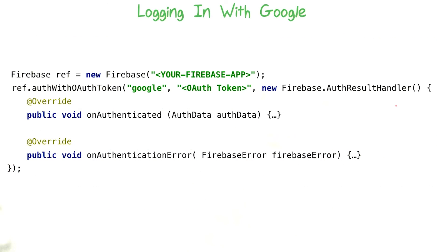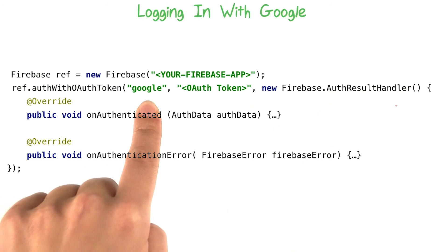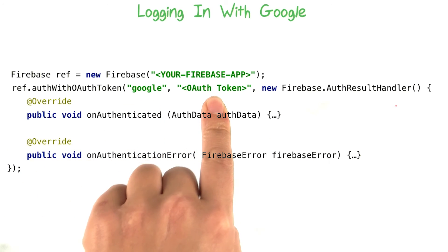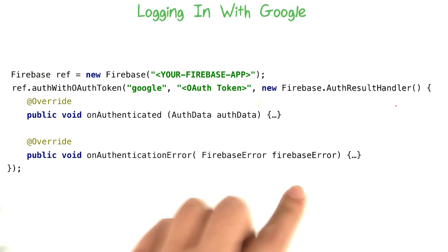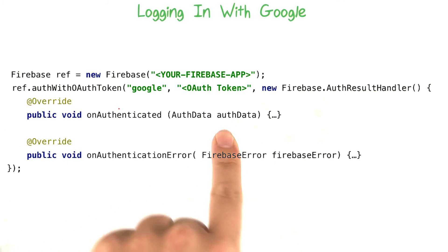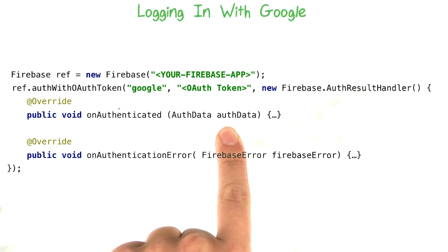Once you've got the OAuth token, signing into Google is almost exactly the same as signing in with email and password. Instead of an email and password, you provide the provider name, which in this case is Google, and that special OAuth token. The result handler works exactly the same. If the user's logged into Google and gives ShoppingList++ all the correct permissions, then onAuthenticated will be called, and you'll have that handy-dandy auth data parameter.